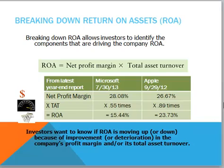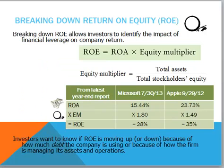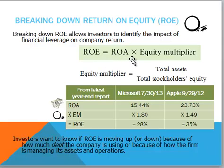Next, we'll break down return on equity. Return on equity in this format allows investors to identify the impact of leverage on the company's return. Return on equity is equal to the return on assets times the equity multiplier. The equity multiplier is calculated by taking total assets divided by total stockholders' equity, and it's a measure of leverage.